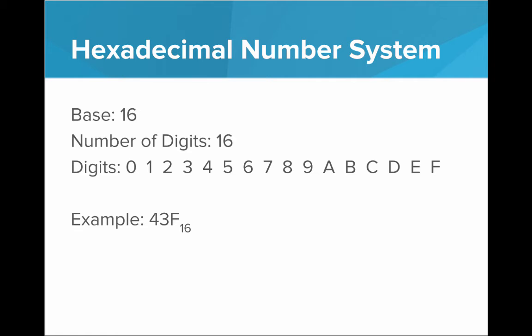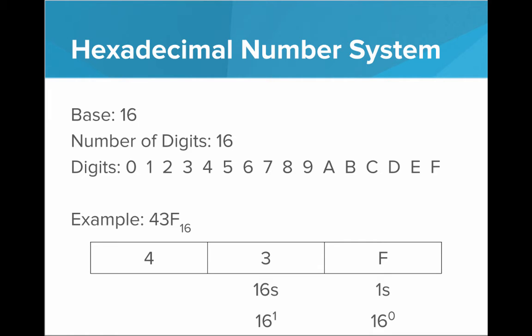So let's look at an example. 43F is a single number in hexadecimal. Let's see what 43F is in binary. We'll lay out all the digits, put the value of each place below it. So this is the 1s place, 16 to the 0. This is the 16s place, 16 to the 1st. And this is the 256 place, or 16 squared.